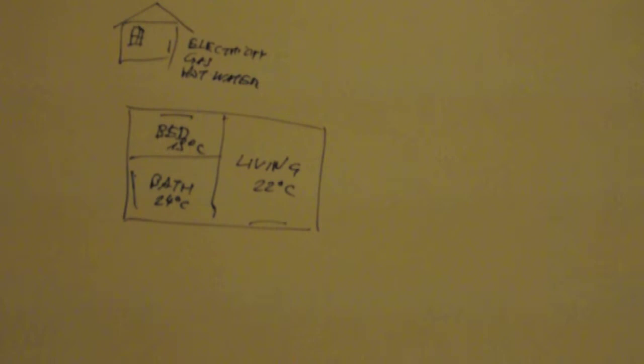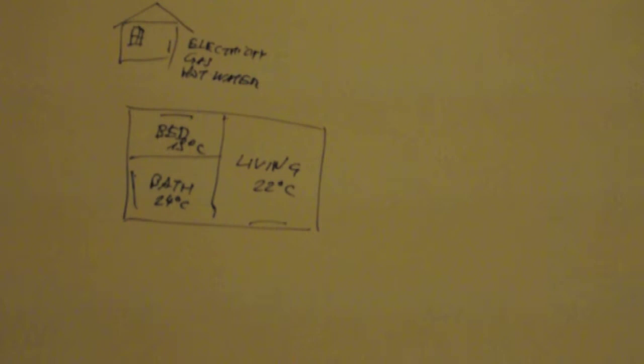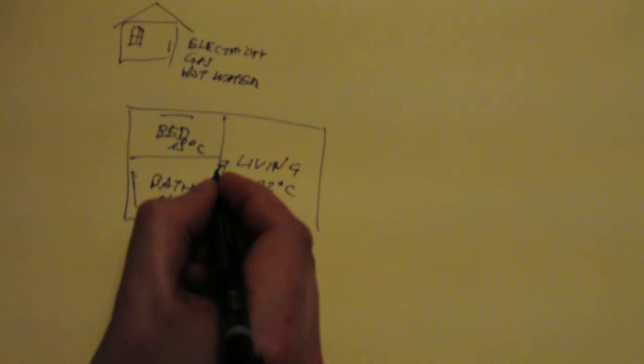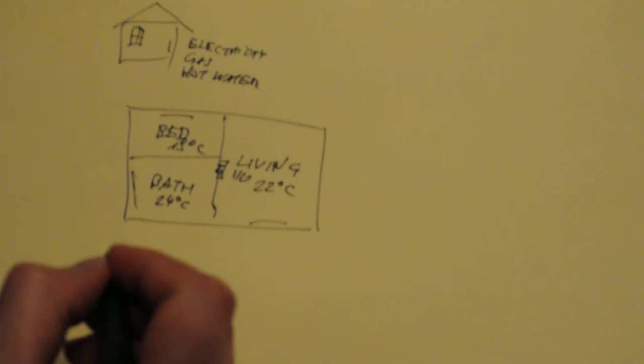Now the typical system has a centrally installed thermostat that controls on and off, so this is a binary operation of the heating system. For example, if this is a boiler, it turns on and off the system to deliver the water into the radiators.